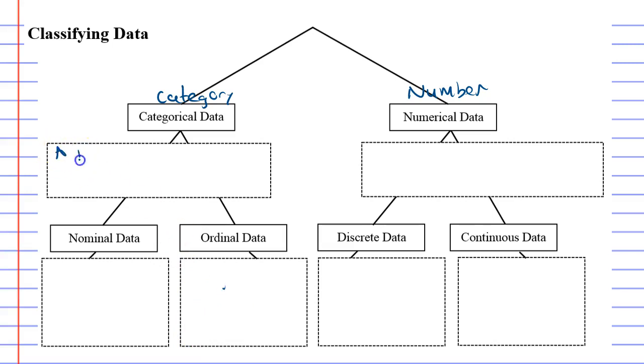A person's sex, because the two categories are male or female. Another one might be the size of pizza. Could be small, medium or large.